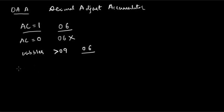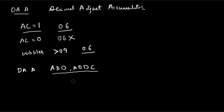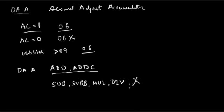One more important point: DAA works correctly only with ADD and ADC instructions. If I want to adjust the result of subtraction with borrow, multiplication, or division, DAA does not work correctly. To get the right result in those cases, the programmer has to handle the adjustment manually. So this was about decimal arithmetic and the importance of the auxiliary carry flag.